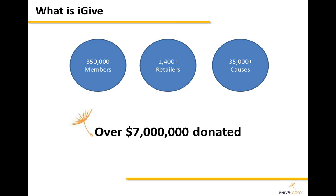iGive has grown to the point where it's working for a lot of different causes. There are about 350,000 people who get emails from us every month, about 1,400 retailers participating, and about 35,000 causes being supported by those 350,000 members. The math is easy: how many people do you have who are online and shopping? Multiply that number by 30, and that's about how much money you should be seeing from iGive every year.